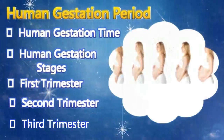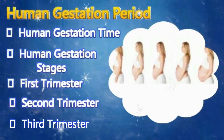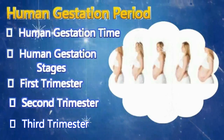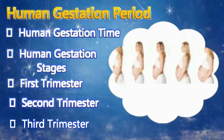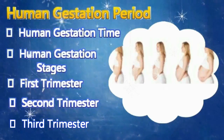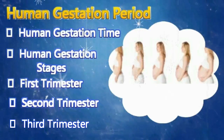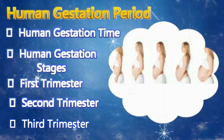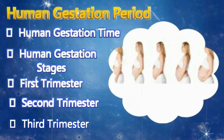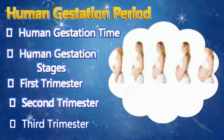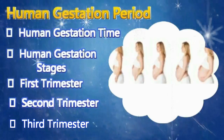The third trimester can be defined as the last three months of pregnancy and it is a crucial period as the body gets ready for childbirth. The size of both the baby and the mother increases considerably at this stage, and the fetus starts changing its position, shifting downwards. Fetal movement is highest during this time, and women may experience pain and discomfort in the spine and ribs. When the fetus reaches 38 weeks in the womb, the mother starts having uterine contractions, which is the first sign of childbirth.